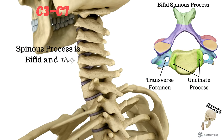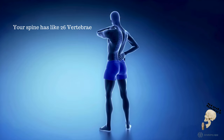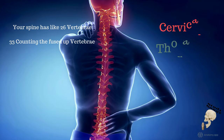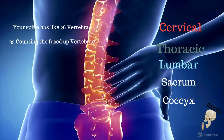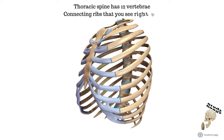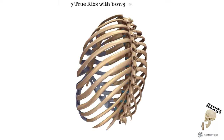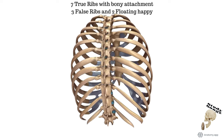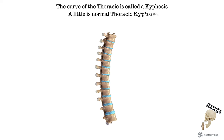Thoracic spine has 12 vertebrae, connecting ribs that you see right away. 7 true ribs with bony attachments, 3 false ribs and 2 floating. The curve of the thoracic is called kyphosis — a little is normal thoracic kyphosis.